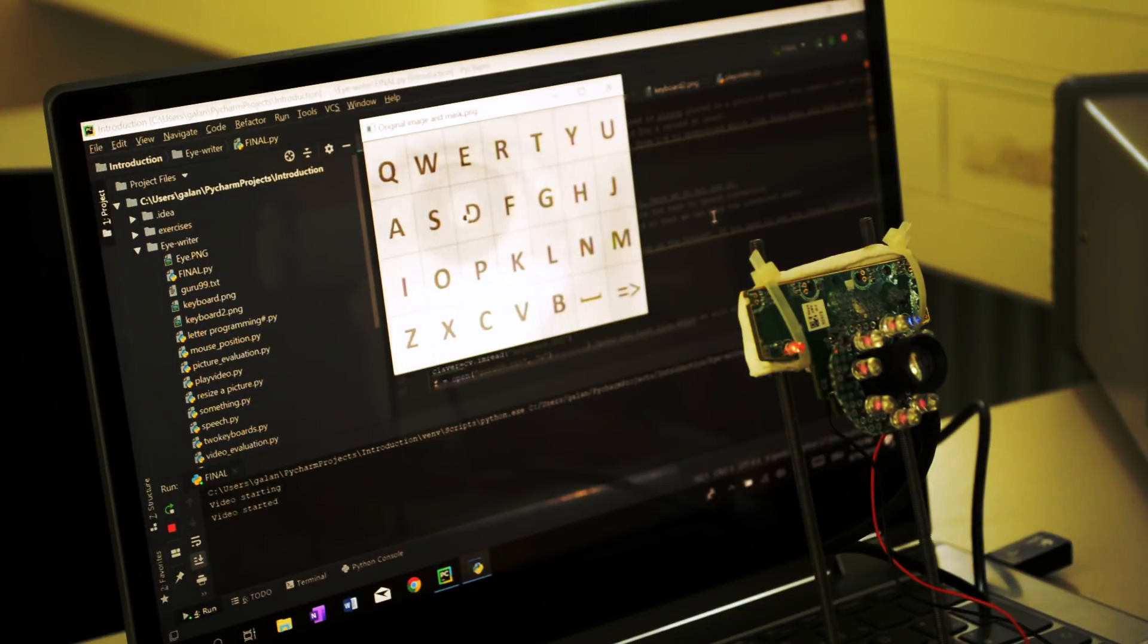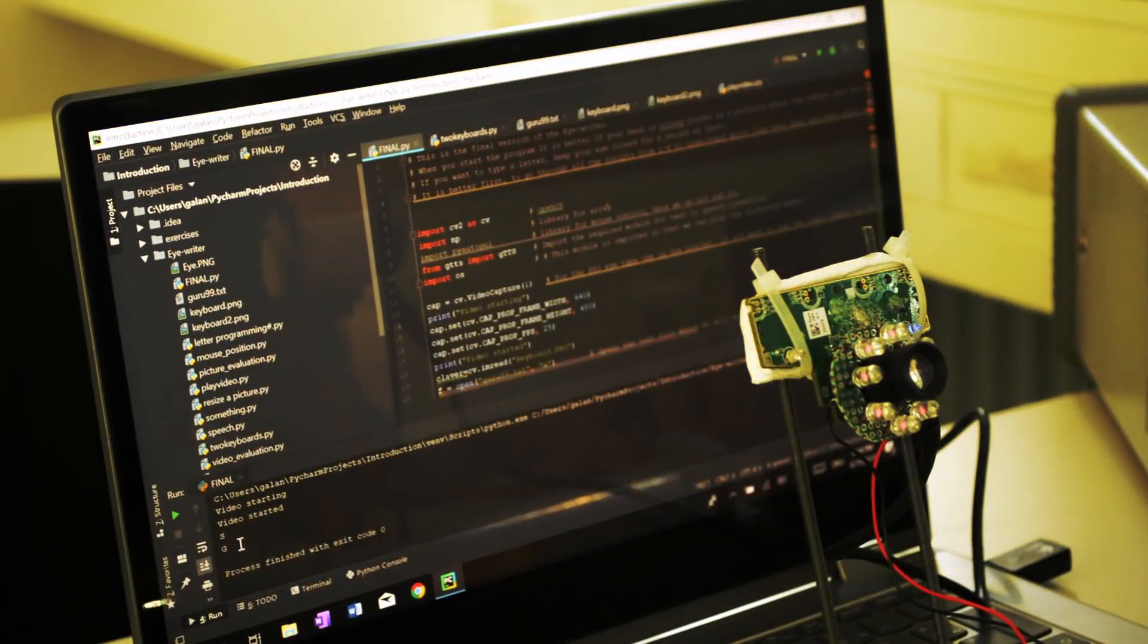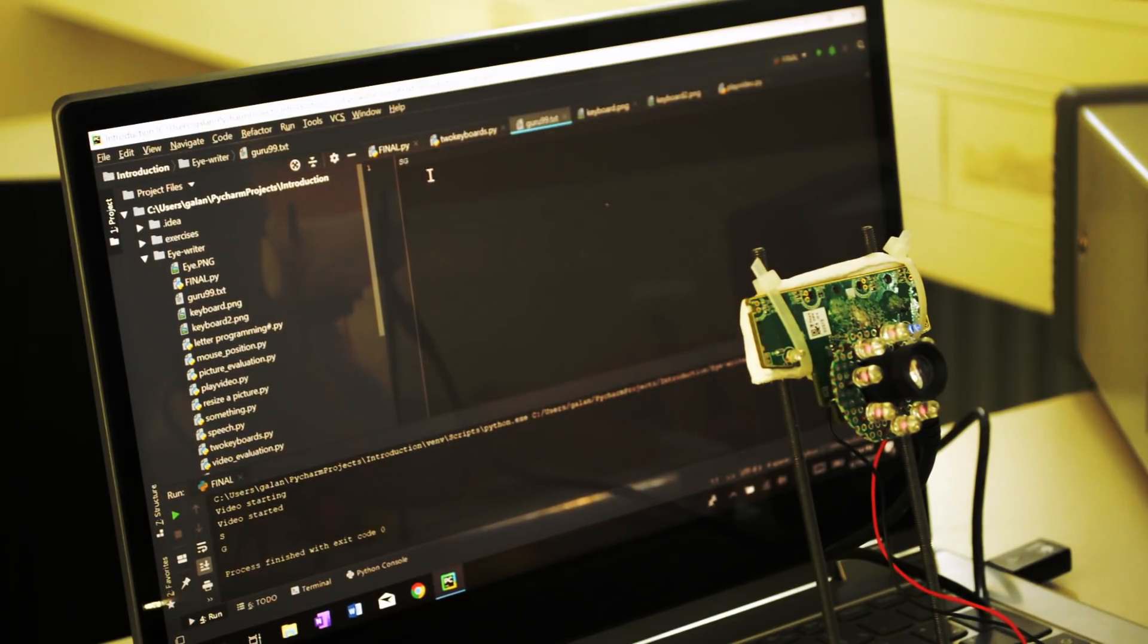With moving my eye I can select whichever letter I want to. For example, if I blink on the letter S, the program takes the letter S. If I blink on the letter G, the program takes the letter G. These letters appear here in the command window and these are also saved in a text file up here.